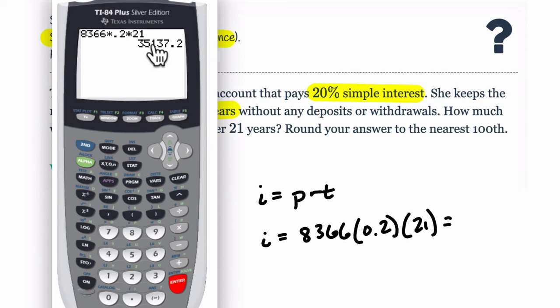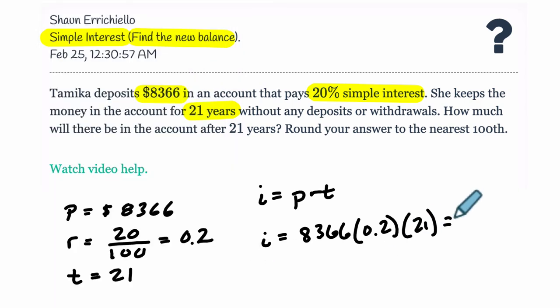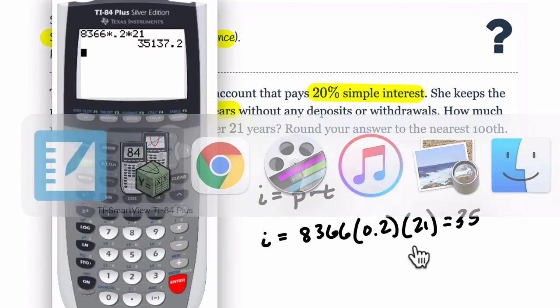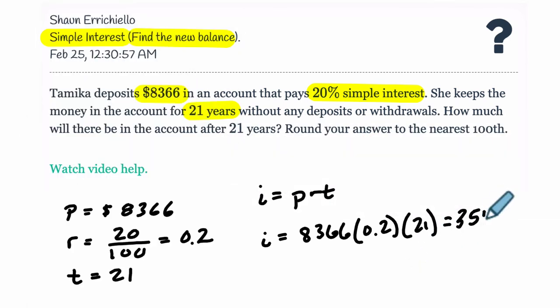So, 35, and I already forgot it because I'm tired, 137.2. That's just our interest, though. And this is a lot because the interest rate is really high, 20%. So, that's a high interest rate. And we take this interest amount and add it to our principal. That's going to get us our new balance.